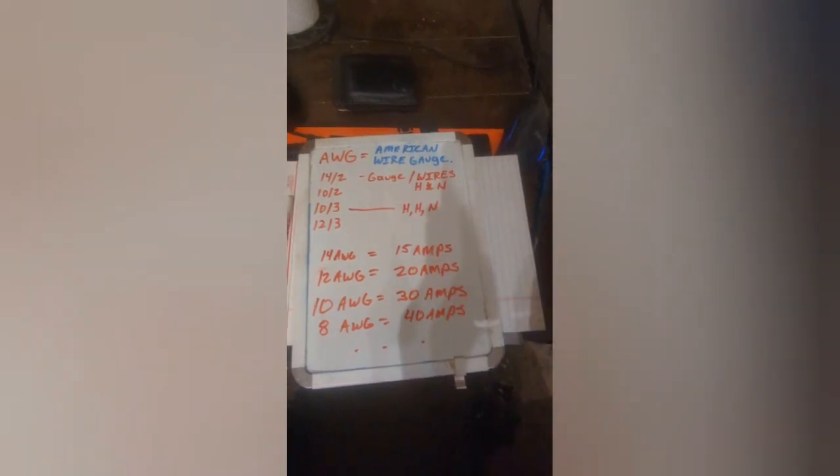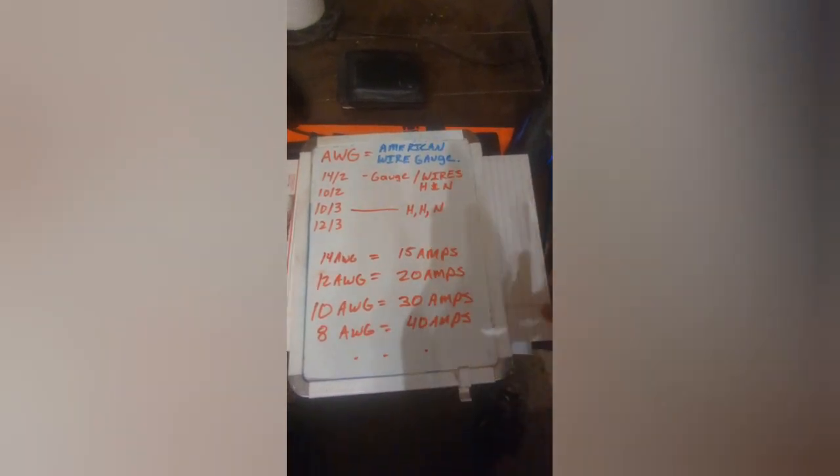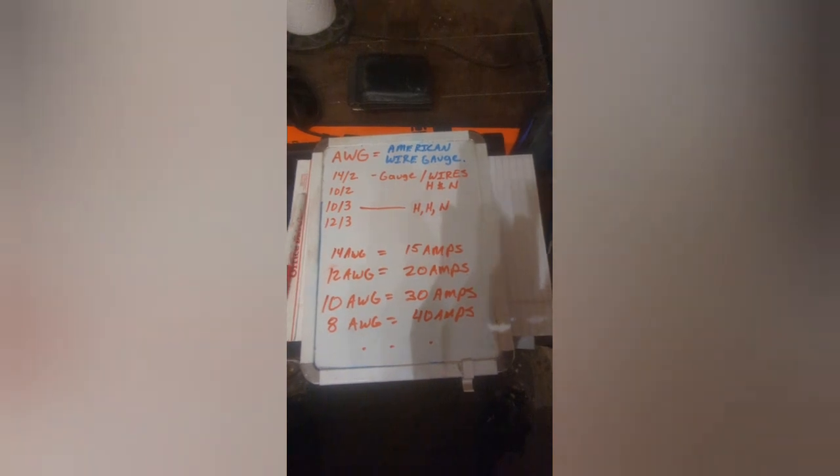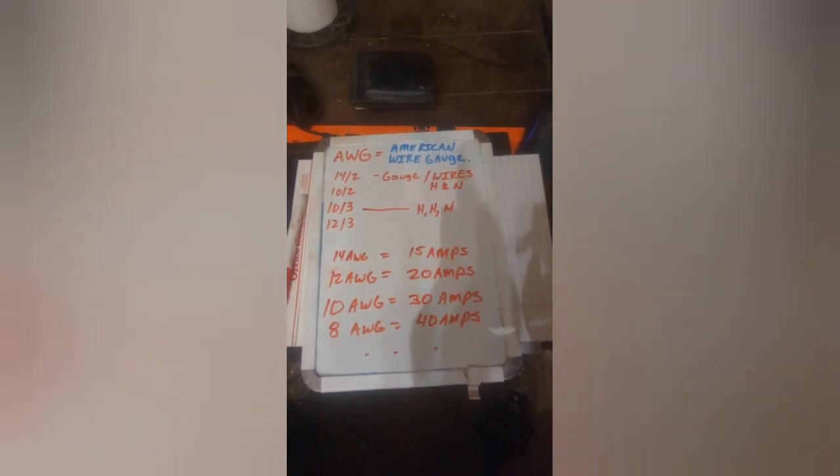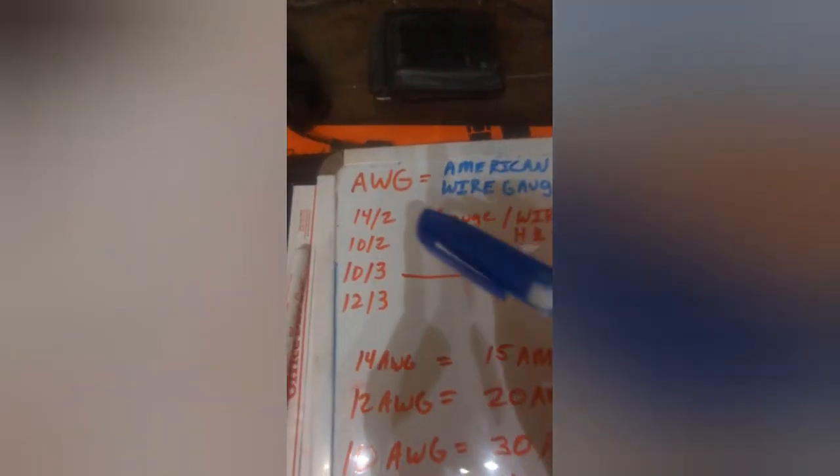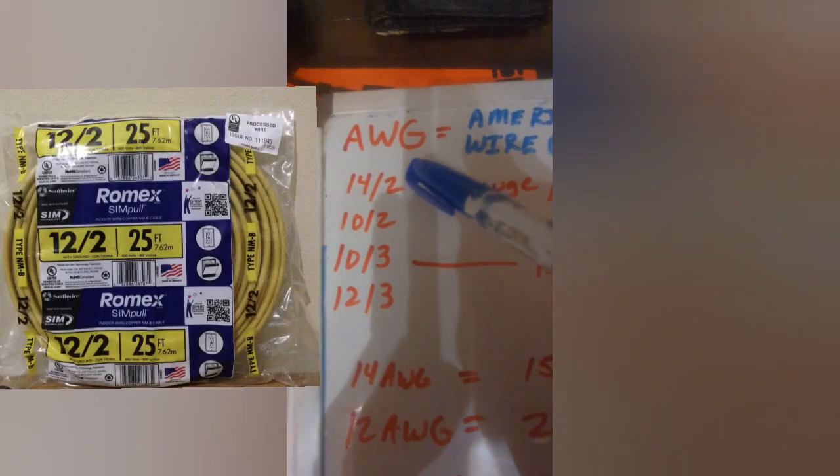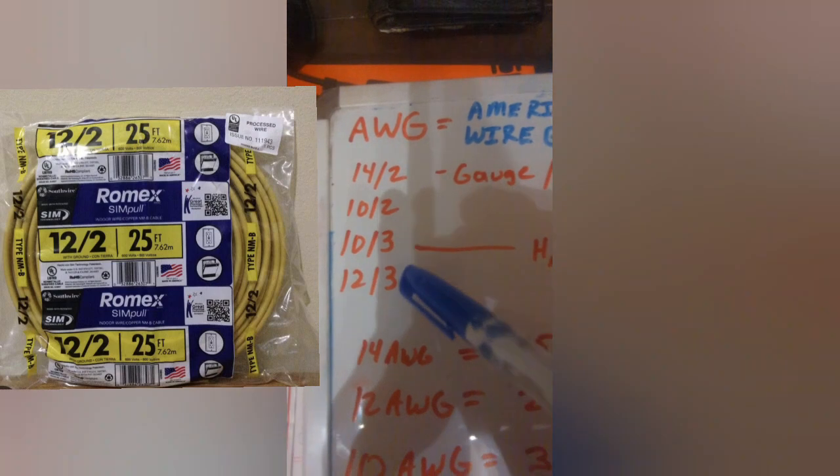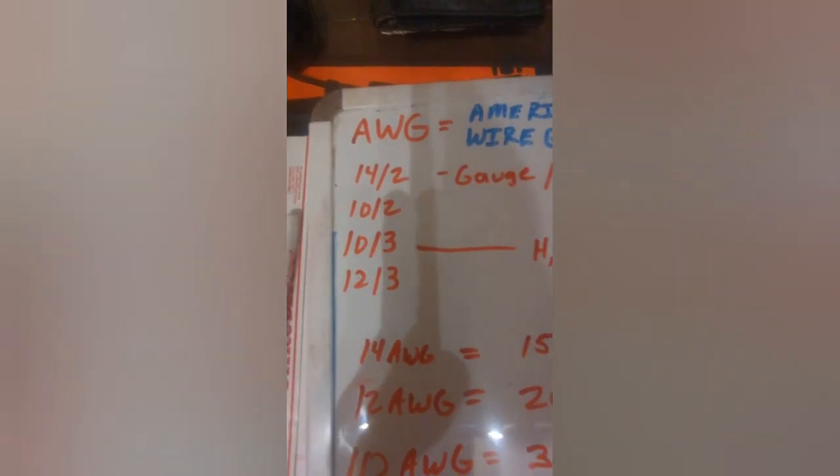There are so many different types of wires and we could be here all night doing this. So I'm really just simplifying this as much as I can. So you'll see numbers like this on the Romex wires. You'll say 14-2, 10-2, 10-3, 12-3. So what does that actually mean?